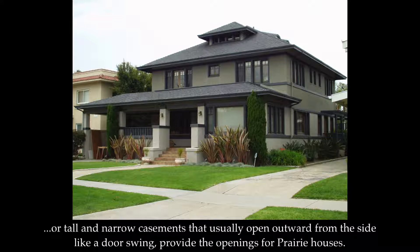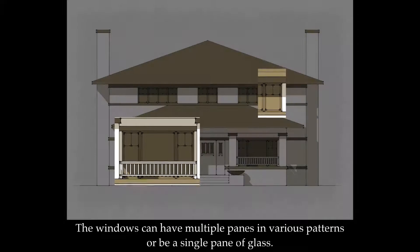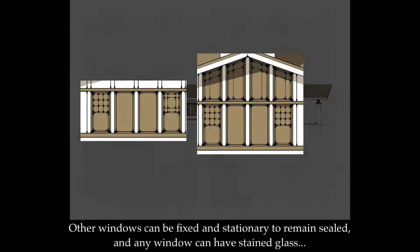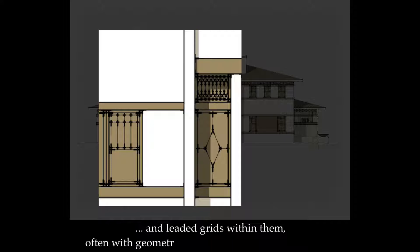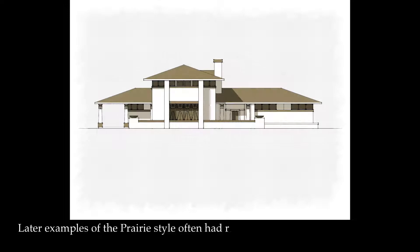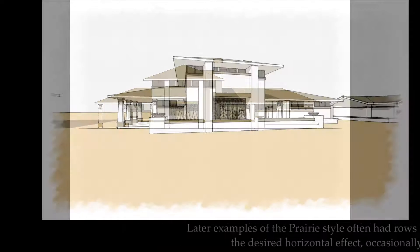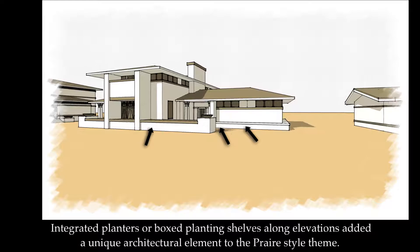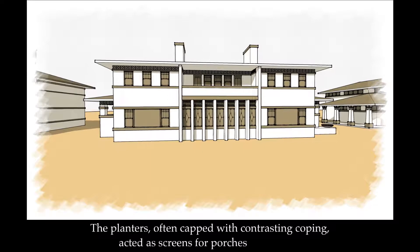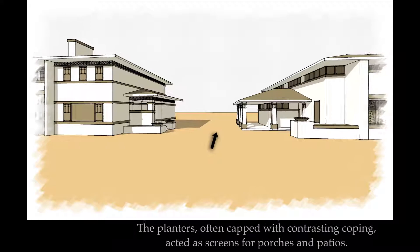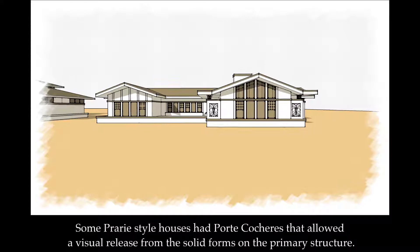The windows can have multiple panes in various patterns or be a single pane of glass. Other windows can be fixed and stationary to remain sealed, and any window can have stained glass and leaded grids within them, often with geometric patterns with organic inferences. Later examples of the prairie style often had rows or ribbons of windows to further desire a horizontal effect, occasionally wrapping the corners. Integrated planters or boxed planting shelves along elevations added a unique architectural element to the prairie style theme. The planters, often capped with contrasting coping, acted as screens for porches and patios. Some prairie style houses had porte-cochères that allowed a visual release from the solid forms on the primary structure.